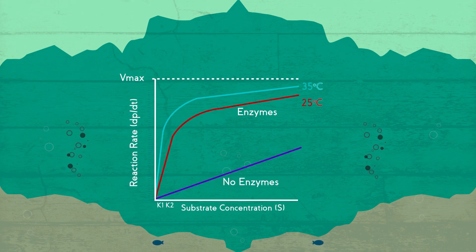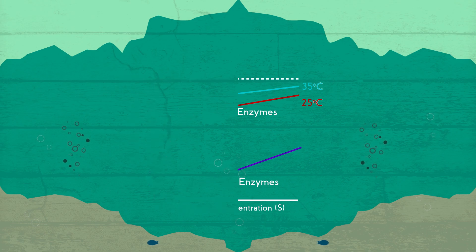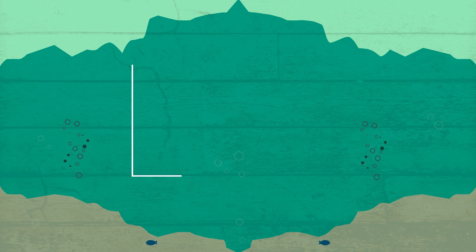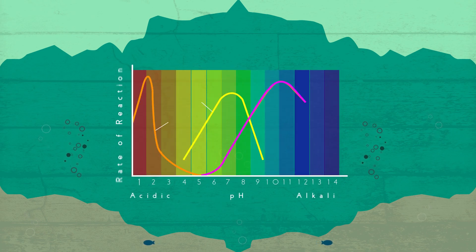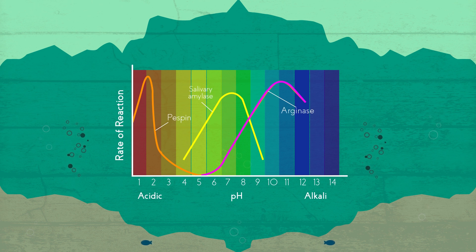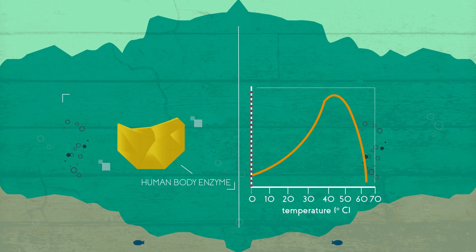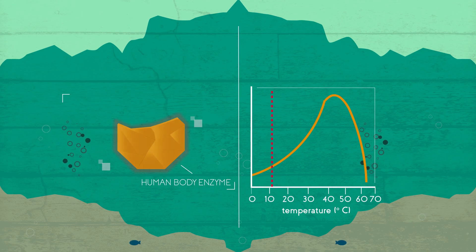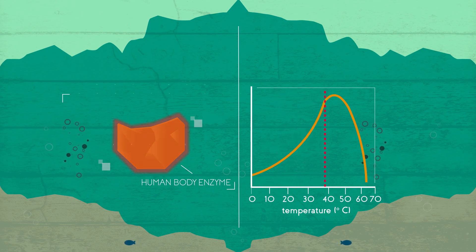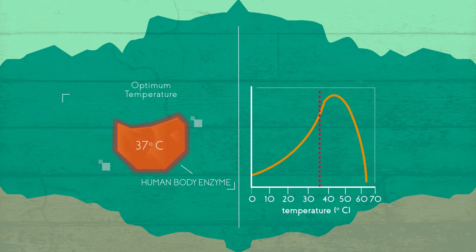So from this video you should know that enzymes have optimal conditions under which they operate. Different enzymes have different preferred conditions, with some preferring acidic conditions and others preferring alkaline conditions. Temperature is also an important factor, with most enzymes having an optimal temperature of 37 degrees Celsius and then denaturing above that.